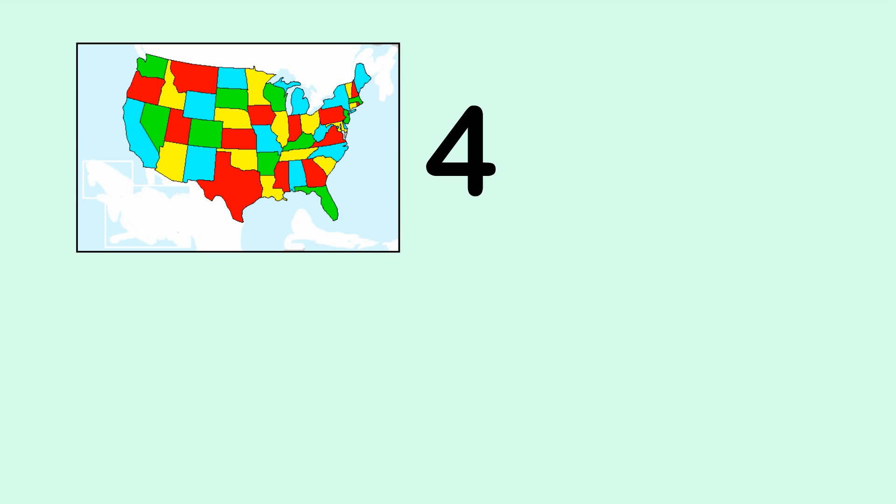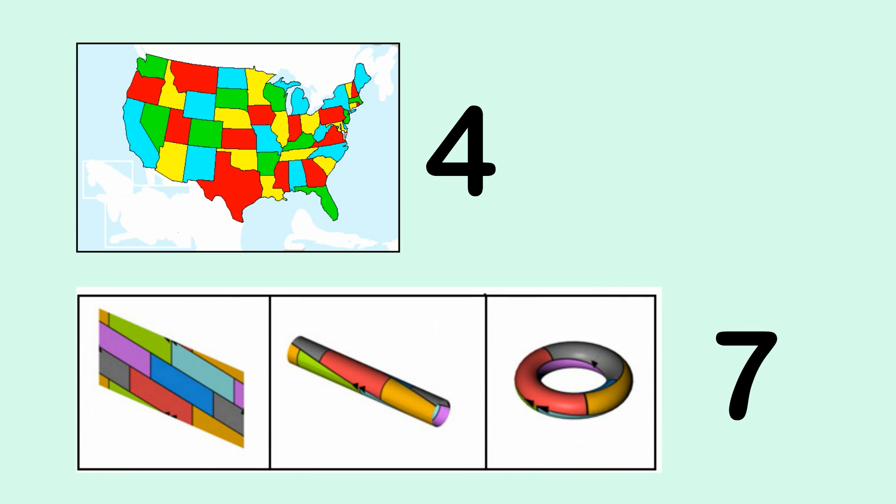Number 2. Only four colours are needed to colour any flat map. That's the four colour map theorem. But you need up to seven colours to colour a map on a doughnut.